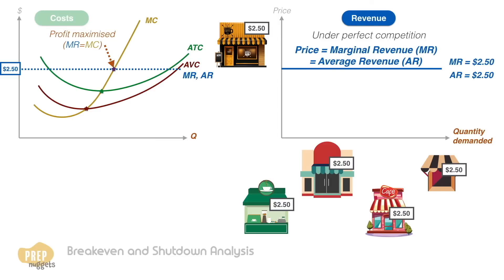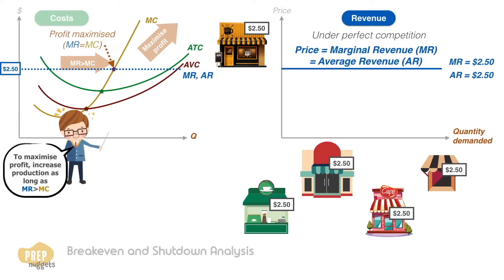To maximize profit, you want to charge as high a price as the competition will allow at as high a quantity as possible. You want to increase production for as long as the MR is greater than MC. So profit is maximized when you produce at Q* cups of coffee per day. The average profit you make per cup is the difference between the marginal cost and average total cost.